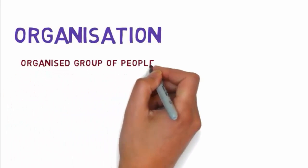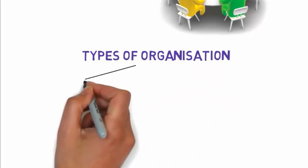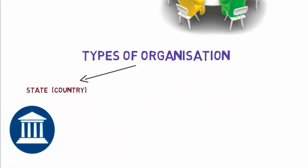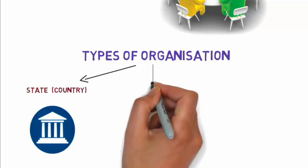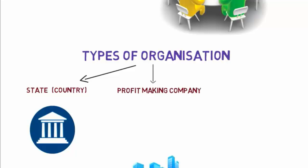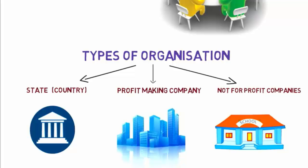What is an organization? An organization is nothing but an organized group of people with a particular purpose, such as a business or government department. There are mainly three types: a state or country like Lok Sabha, Rajya Sabha, and High Court; profit-making companies like Flipkart, BSNL, Airtel, and Amazon; and not-for-profit companies like NGOs and some government schools.